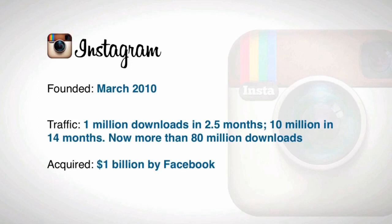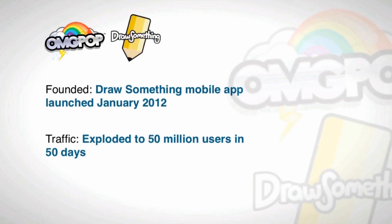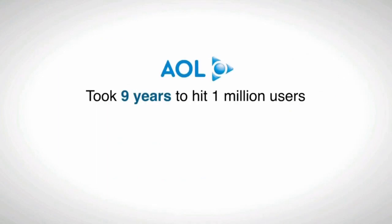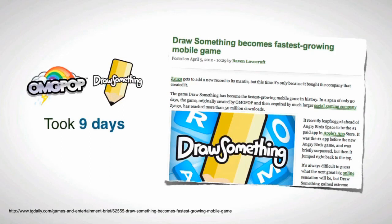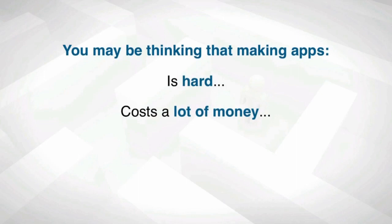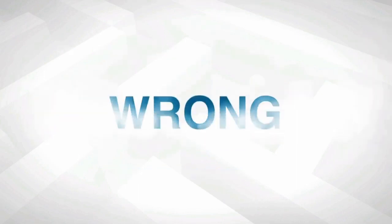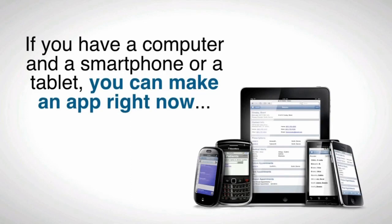Facebook bought Instagram because of how many downloads they were getting. Draw Something, the mobile app, was launched in January of 2012 and exploded to 50 million users in 50 days — acquired by Zynga for $180 million. It took AOL nine years to hit the million user mark, Facebook nine months, and Draw Something just nine days. You may think that making apps is hard, costs a lot of money, is a flooded market, and requires programming — well, you're wrong. Making an app is easy, and if you have a computer and a smartphone or tablet, you can make an app right now.